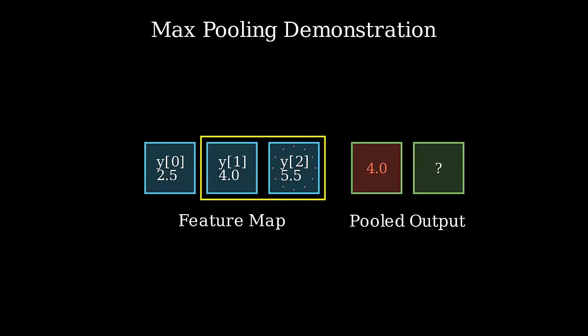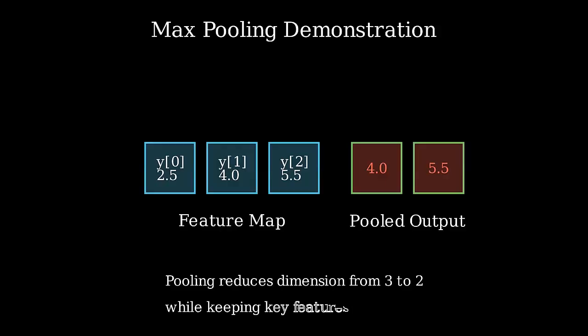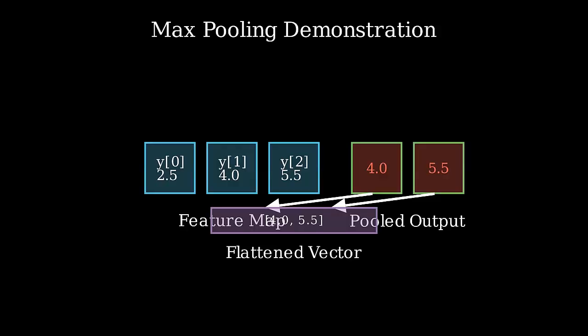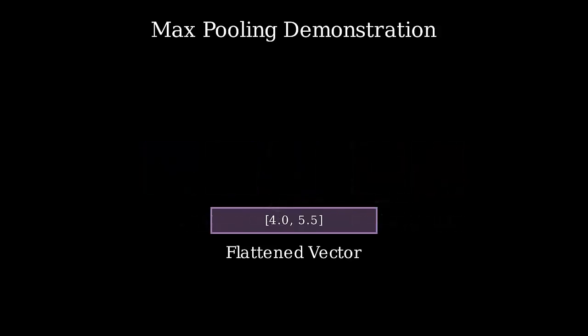Now the window slides one step to the right, covering the next two values, which are 4.0 and 5.5. Between these two, the maximum value is 5.5. We transfer that value to the second cell of the pooled output. The result is a reduced dimension of our data from three values to just two, while retaining the most important information, which is the highest activation in each local region. Finally, this pooled output is converted into a single one-dimensional flattened vector. Here, this vector is sent to the dense classification layer for prediction.